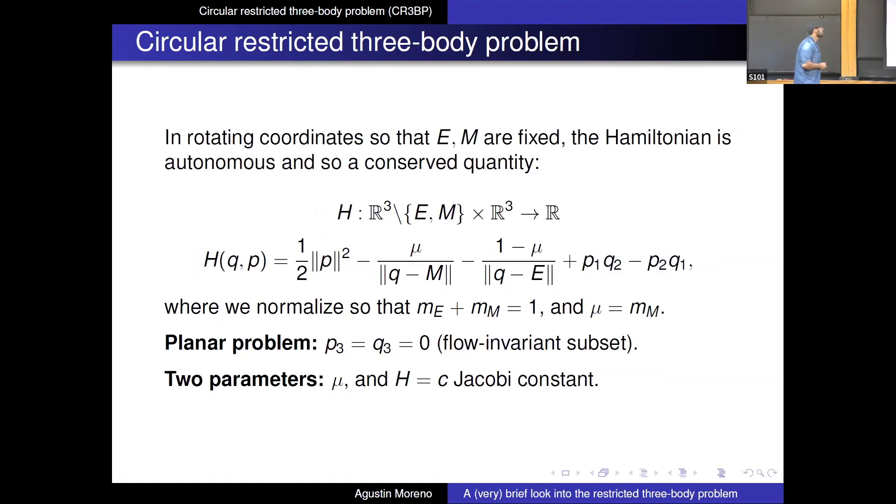So this is of course a Hamiltonian problem, and because of the assumption that we made on the rotating coordinates, we can actually take new coordinates which are rotating with the rotation of the Earth and the Moon in such a way that now they're fixed. And the game for us, this is a magical fact, is that the Hamiltonian actually becomes autonomous, and so in particular it's a conserved quantity of the motion. So you can write it down explicitly, it has some kinetic term, then there's some gravitational potential associated to each of the primaries, and the price we pay is the appearance of this last angular momentum term, keeping track of the rotating frame.